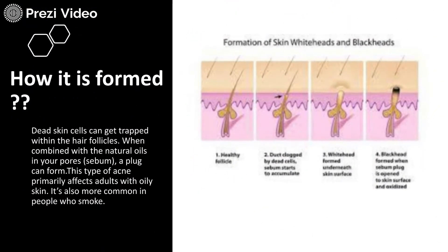Why are blackheads or whiteheads formed? It usually happens that the surface discharges dead cells. Dead skin gets entrapped with the hair follicles. When the dead skin is not being removed and it gets entrapped with the hair follicles, when combined with the natural oils in the pores — for example, the sebum — a plug can be formed. This type of acne primarily affects adults with oily skin and is more common in people who smoke.